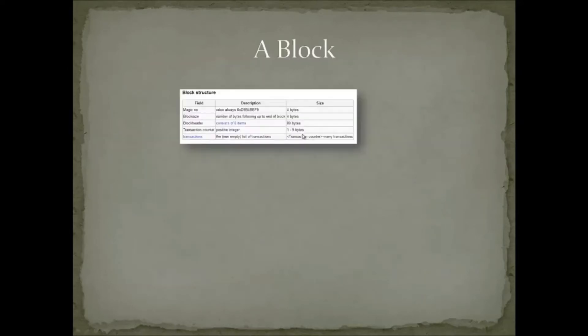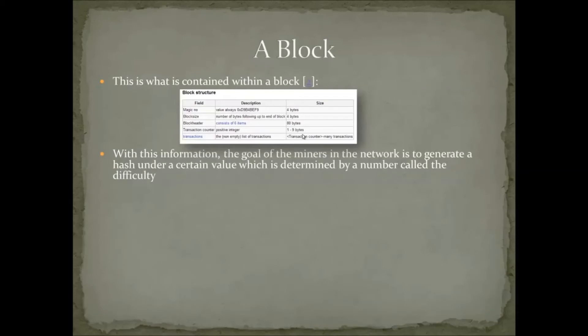Now let's discuss a block. A block is basically a bulk set of transactions — roughly all the transactions that have taken place over 10 minutes — alongside a really hard math problem. This math problem is solved by finding what's called a hash value under a certain threshold. We have things called hashes: you take an input and a cryptographic hash produces just some random string of numbers. The hash protocol Bitcoin uses is called SHA-256.